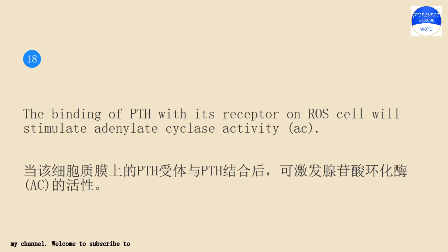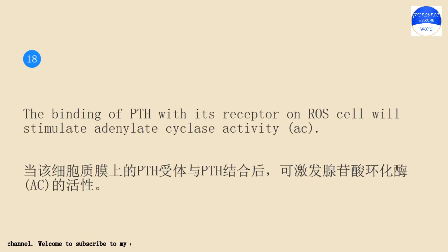The binding of PTH with its receptor on ROS cell will stimulate adenylate cyclase activity.